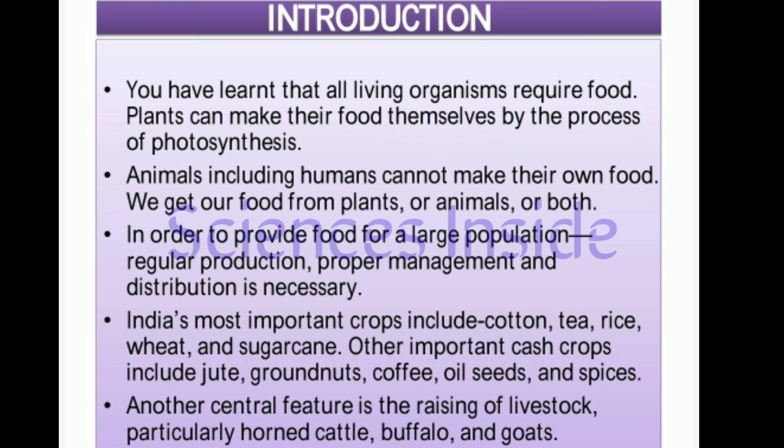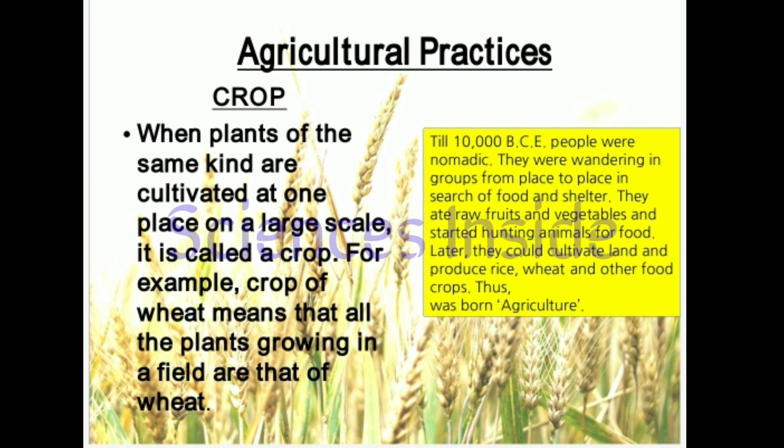India's most important crops include cotton, tea, rice, wheat, and sugarcane. Other important cash crops include jute, groundnuts, coffee, oil seeds, and spices. The practice of growing plants and rearing animals on a large scale for food, fiber, and other useful products is called agriculture.